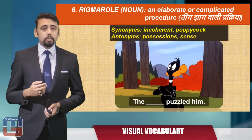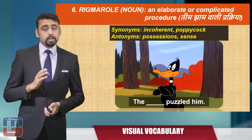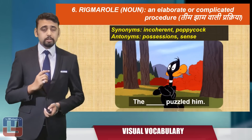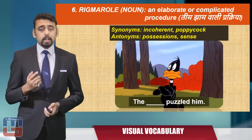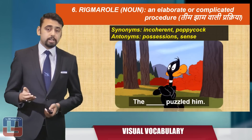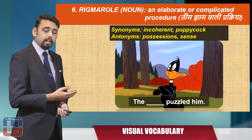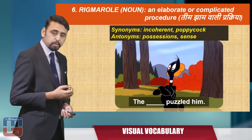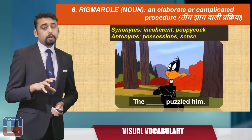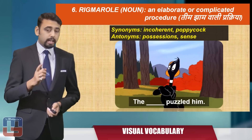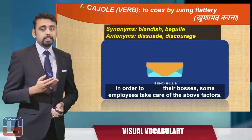Here's the next word: 'rigmarole.' Rigmarole is a noun meaning an elaborate or complicated procedure. The synonyms are 'incoherent' or 'poppycock,' and the antonyms are 'possessions' or 'sense.' You can see a confused Daffy Duck. The sentence: 'The blank space puzzled him.' The answer: 'The rigmarole puzzled him.'